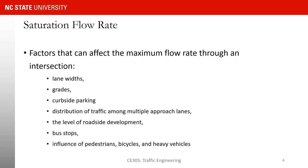Here you can see the list of those factors and I want to go through each of them and explain how they will change our saturation flow rate. Think about lane width — if your lane width is narrow, let's say 10 feet instead of 12 feet, do you think you can process more vehicles than the assumed 1900 passenger cars per hour per lane, or less? If the lane is narrower than 12 feet, we are going to be able to process fewer vehicles.